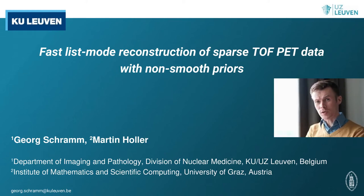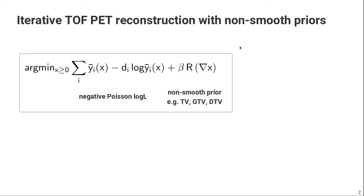Welcome to my talk on fast, less smooth reconstruction of sparse TOF PET data with non-smooth priors. Iterative time-of-flight PET reconstruction with non-smooth priors means solving the optimization problem shown here. It consists of two parts.